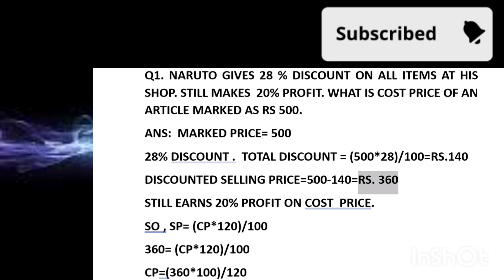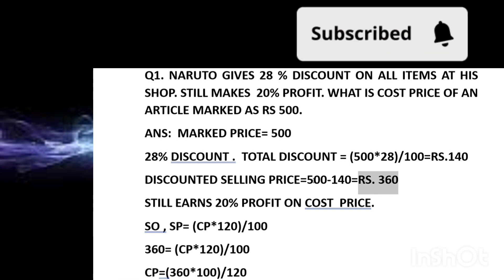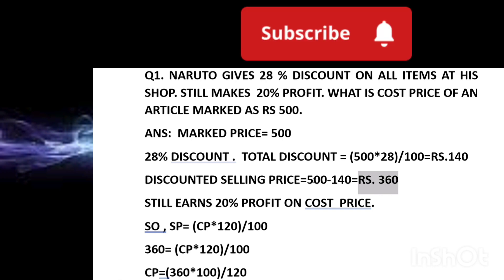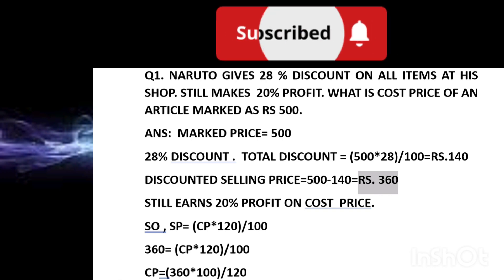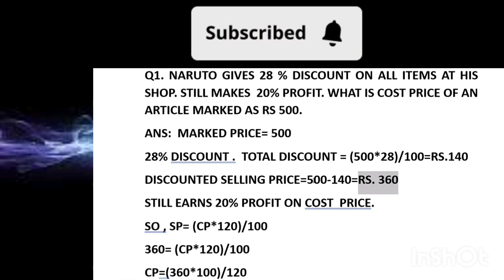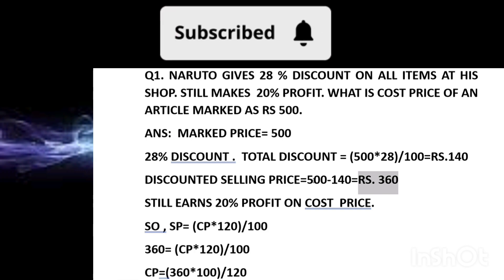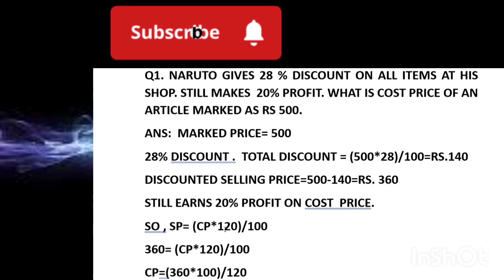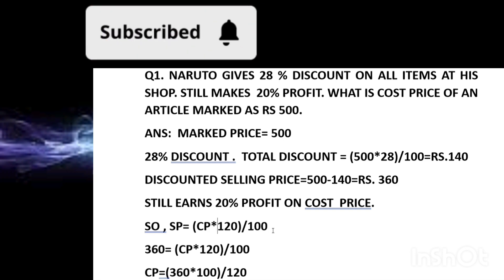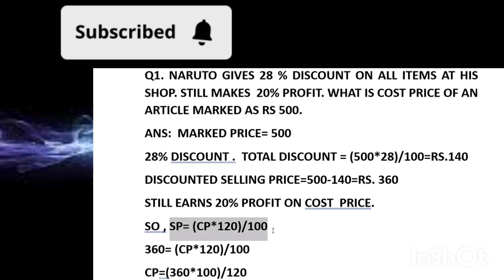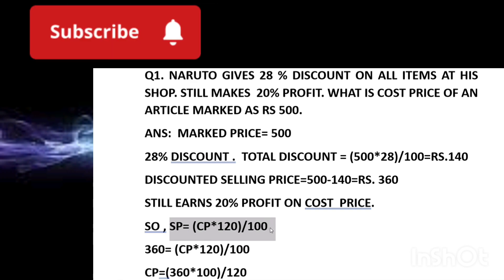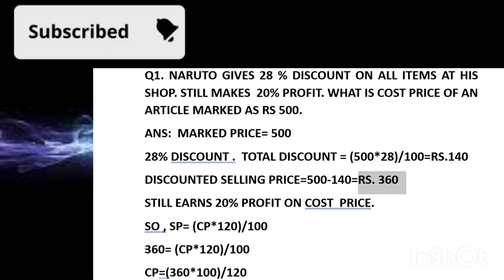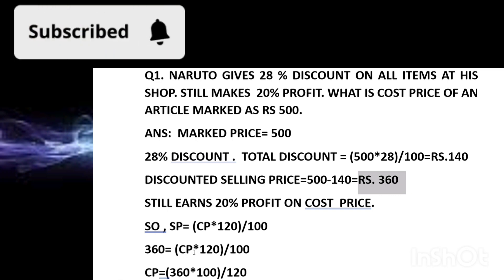Now we need to find the cost price. Let's assume cost price is 100. Naruto earns 20% profit, and profit is earned on cost price. So if cost price is 100, profit is 20 rupees, and selling price = cost price + profit = 120. So selling price = CP × 120/100. We already know the selling price is 360, so: 360 = CP × 120/100.